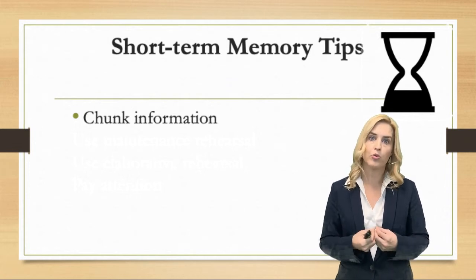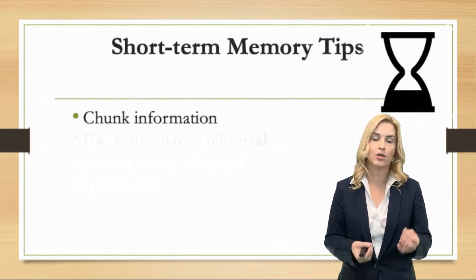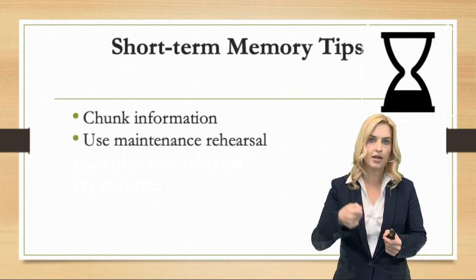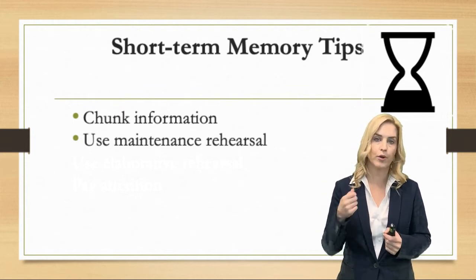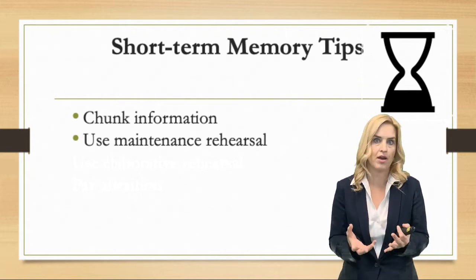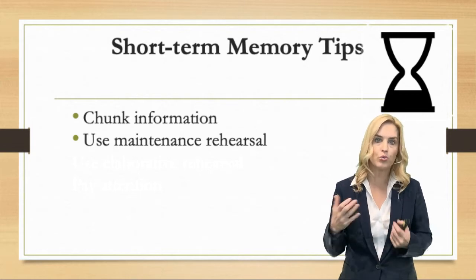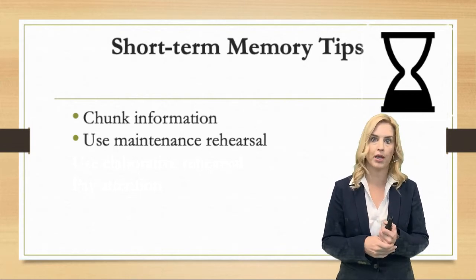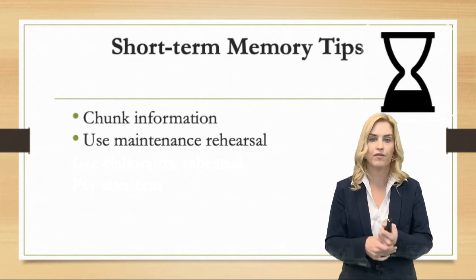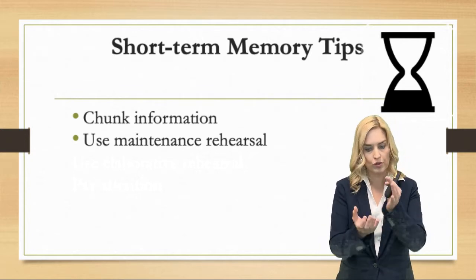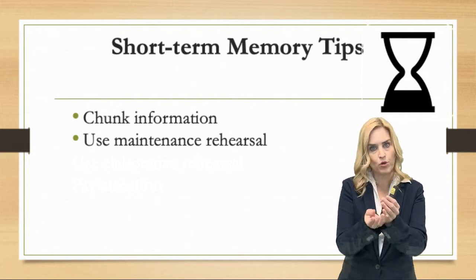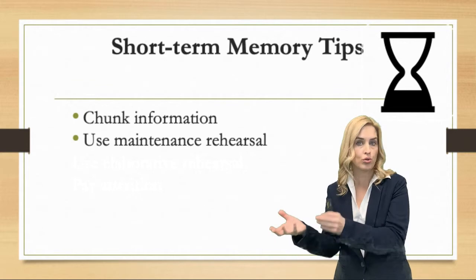Another thing we can do to help with short-term memory is called maintenance rehearsal — this is when you repeat that information to yourself over and over again. So you're supposed to remember somebody's phone number and you don't have your cell phone to type it in, so you repeat it over and over: 555-5555. That's maintenance rehearsal — it keeps it in your working memory a little bit longer so it has more time to be encoded into your long-term memory.